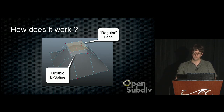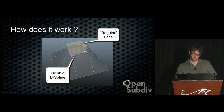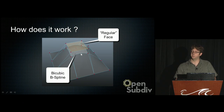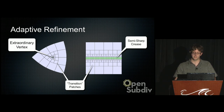The original Ed Catmull paper was on recursively generated B-spline surfaces, and that's what we're actually getting back to. A regular face and its surrounding vertices can generate an underlying bicubic B-spline — that's the patch we're dicing in hardware. Around extraordinary vertices, we recursively subdivide to generate exact Catmull-Clark representations, and we do the same thing around creases.